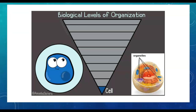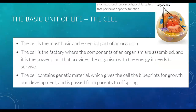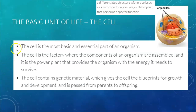We're going to start with the cell, which is the basic unit of life. The cell is the most basic and essential part of an organism. The cell is the factory where the components of an organism are assembled, and it is the power plant that provides the organism with the energy it needs to survive. The cell also contains genetic material, which gives the cell the blueprints for growth and development and is passed from parents to offspring.